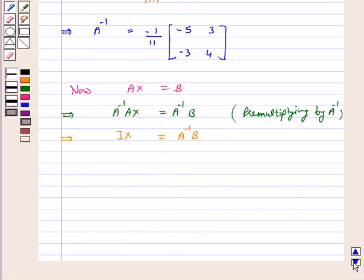This implies X is equal to A inverse, minus 1 over 11 into minus 5, 3, minus 3, 4 into B which is 3, 7.